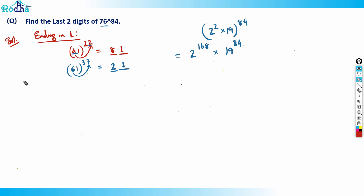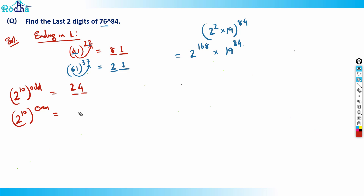The pattern for powers of 2 is: 2 raised to 10 into any odd power will always end in 24, and 2 raised to 10 into any even power will always end in 76.